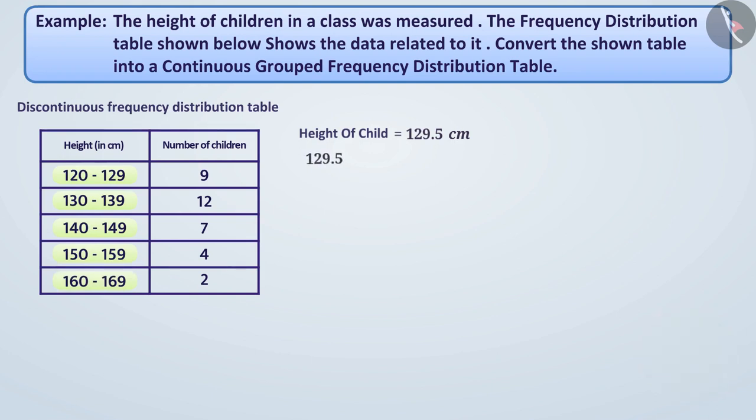Since 129.5 is greater than 129, it cannot be included in the class interval 120 to 129. Similarly, 129.5 is smaller than 130, so it cannot be included in the class interval 130 to 139. Thus, this number cannot be included in any class interval.